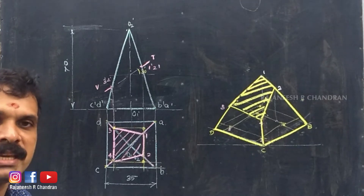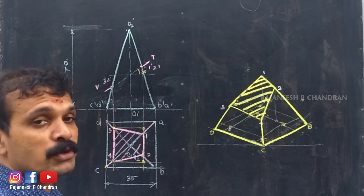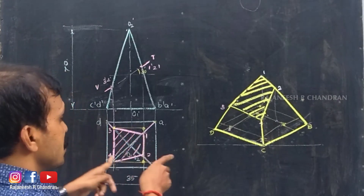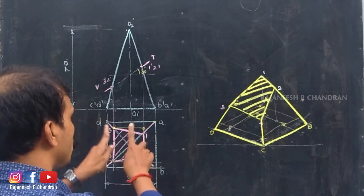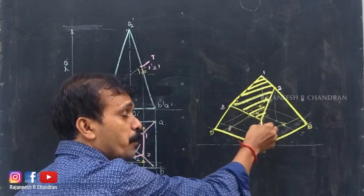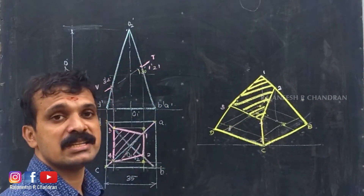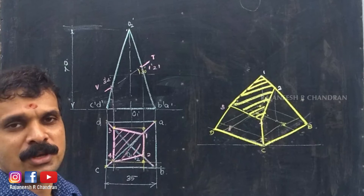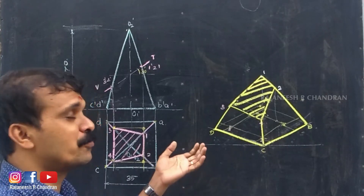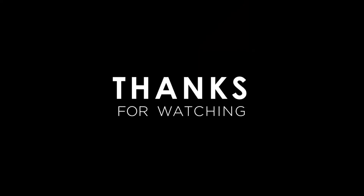It is very easy. The first thing is to complete the orthographic projection. Once you complete the orthographic projection, first construct the isometric view of the top view and the section. From the section points, take the corresponding height of the section and complete the isometric. I think all of you have understood this question. Thank you.